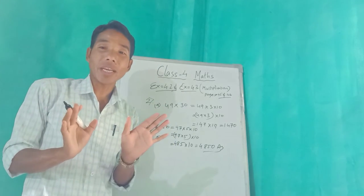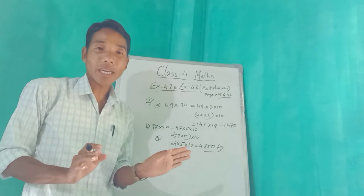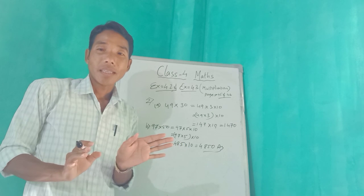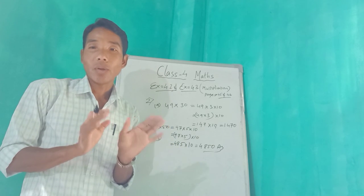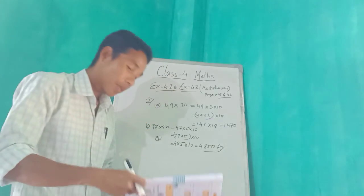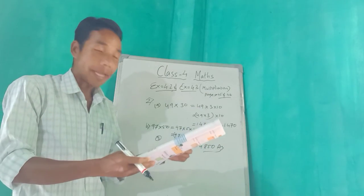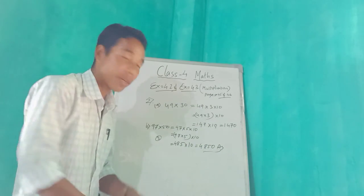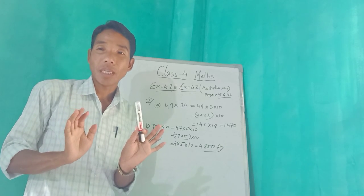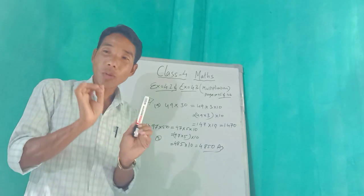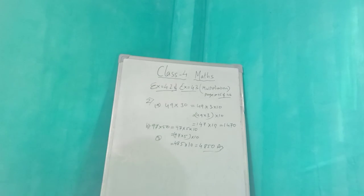Have you understood? It is also very easy — just arrange it like this. If you have any doubt you can ask. No doubt? So the rest, from number C to I, try to do by yourself at home in your notebook. Okay class, thank you!